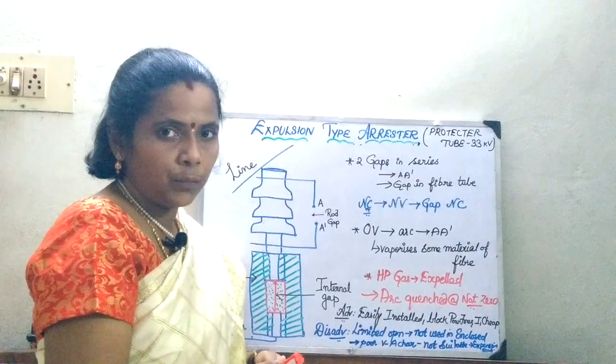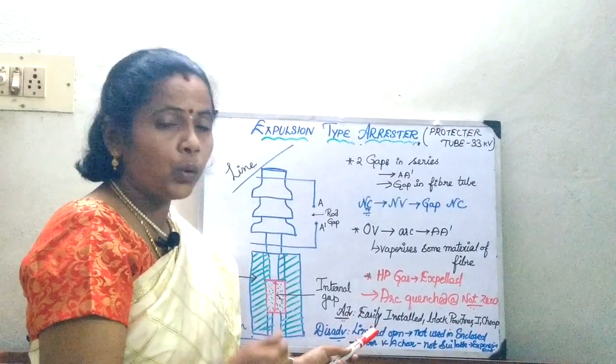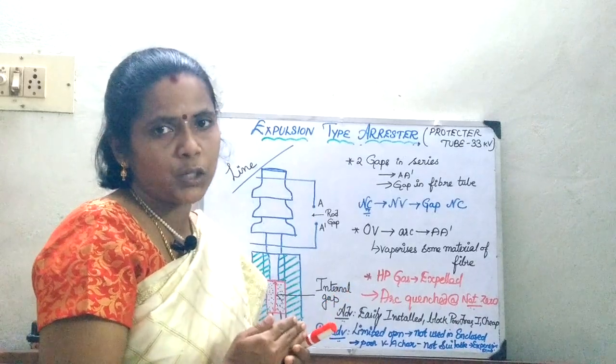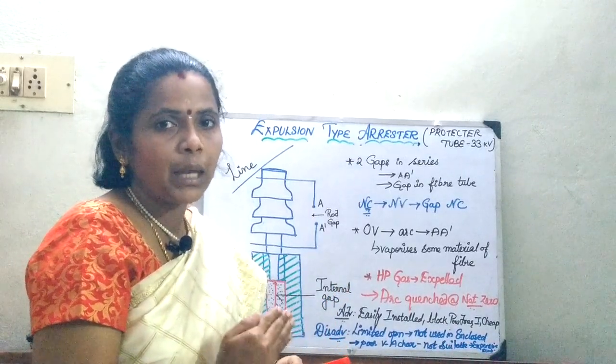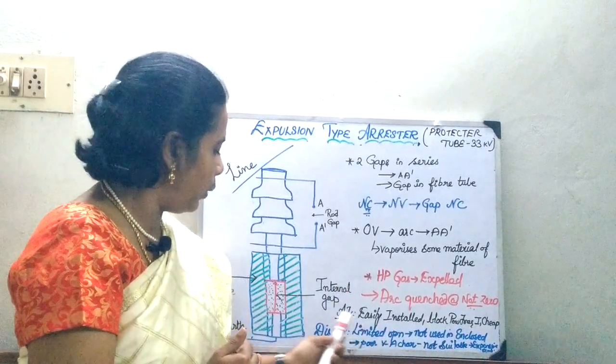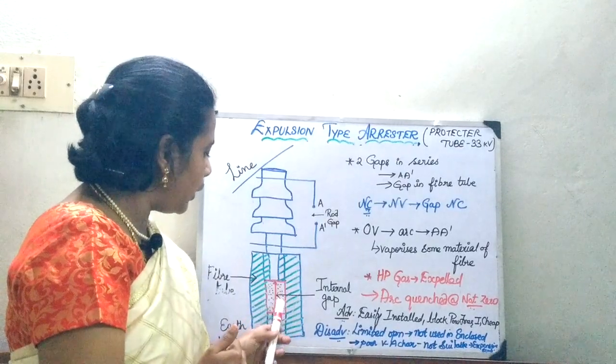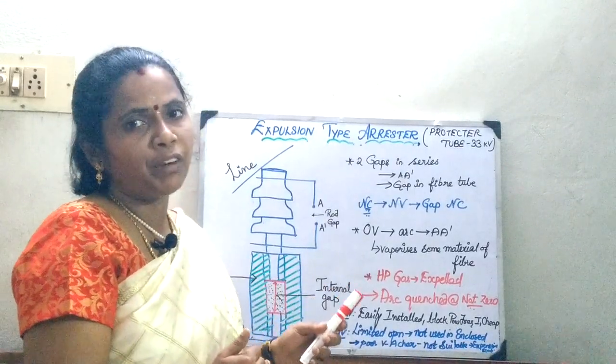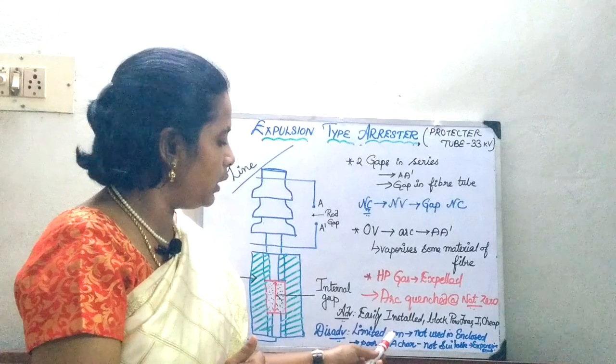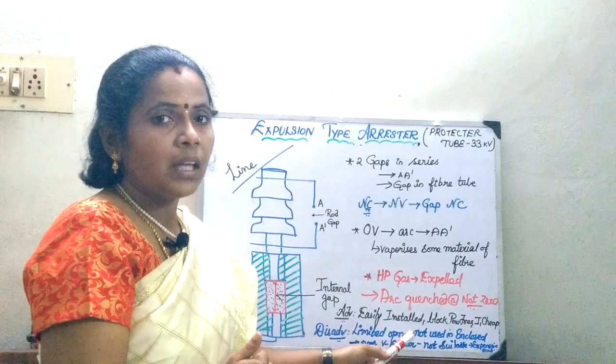When moving on to the disadvantage, you can use it only for limited operations. Why? Because every time when the arc is going to spark over, it is going to eat up some of the materials of the fiber arc. So, you can use it only for limited operations.